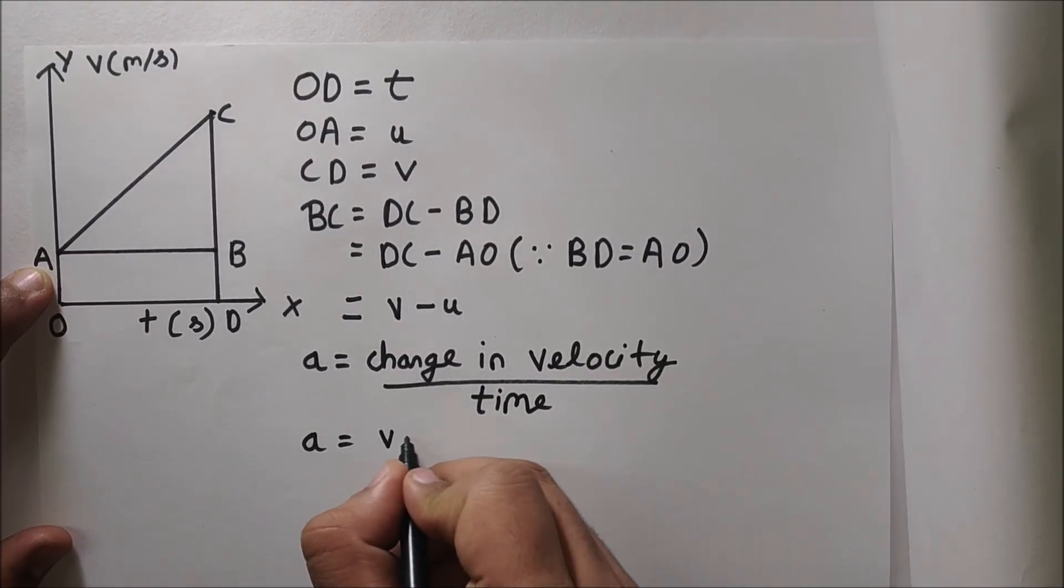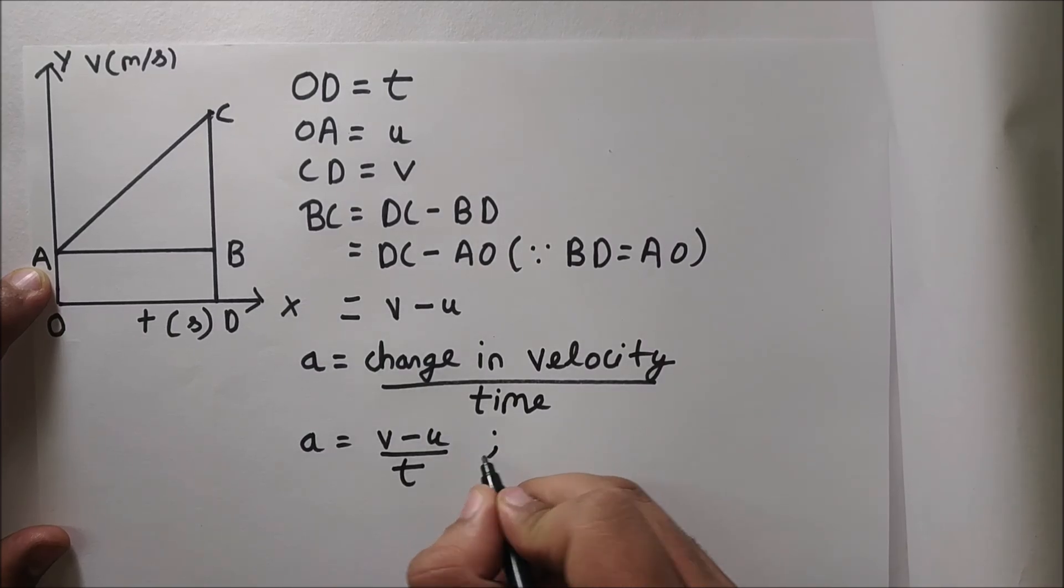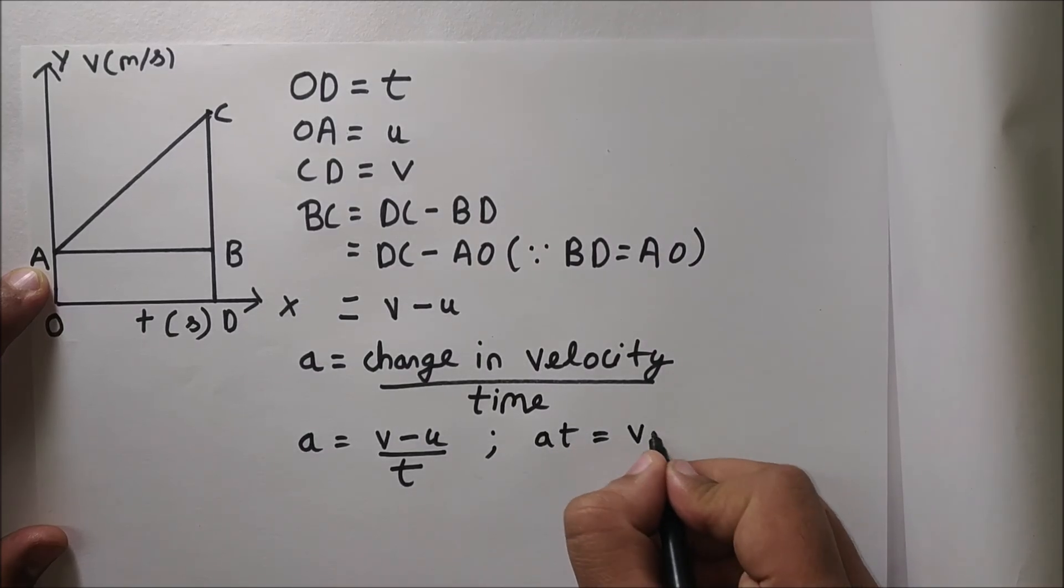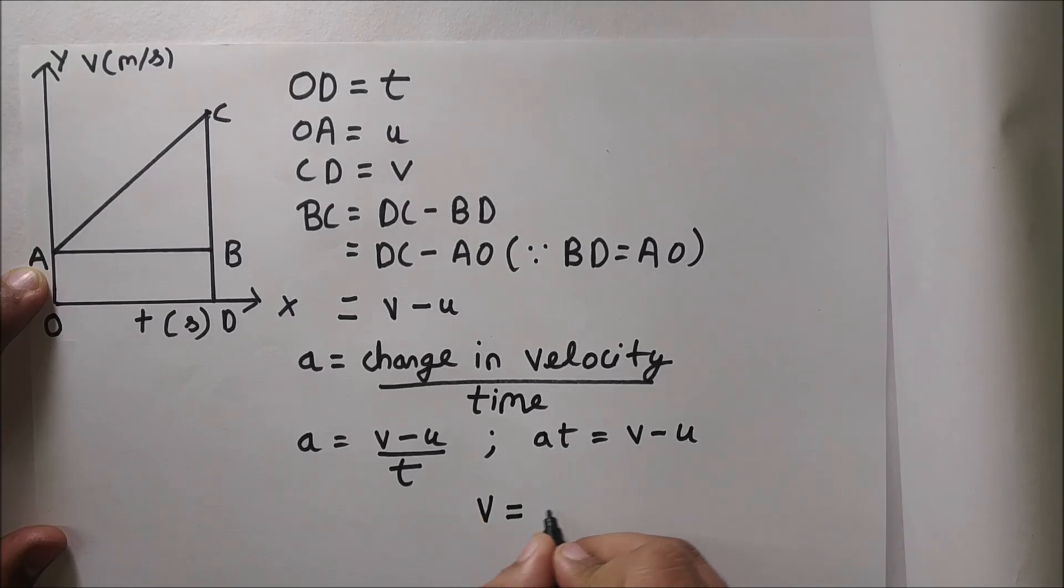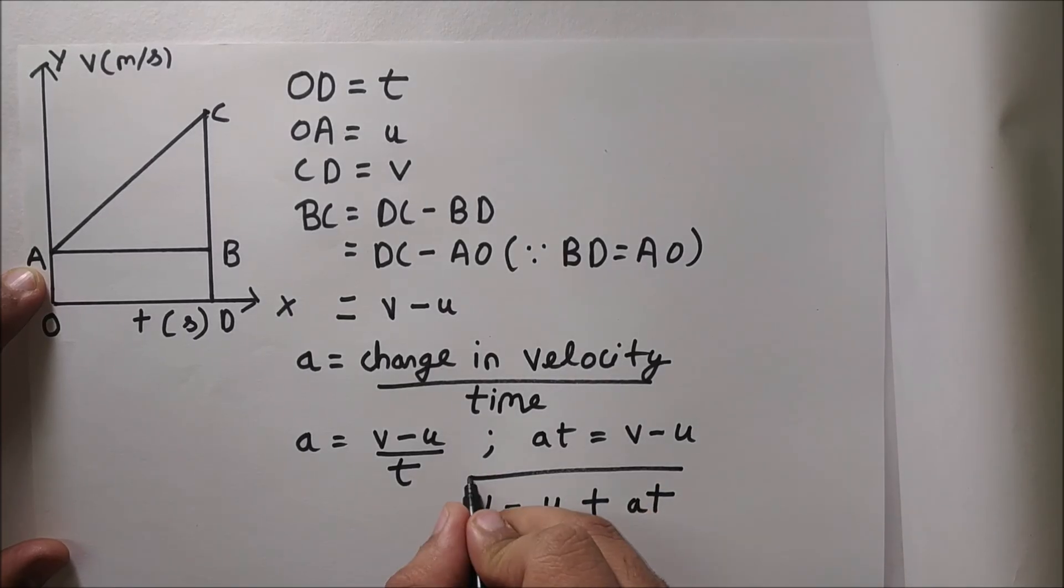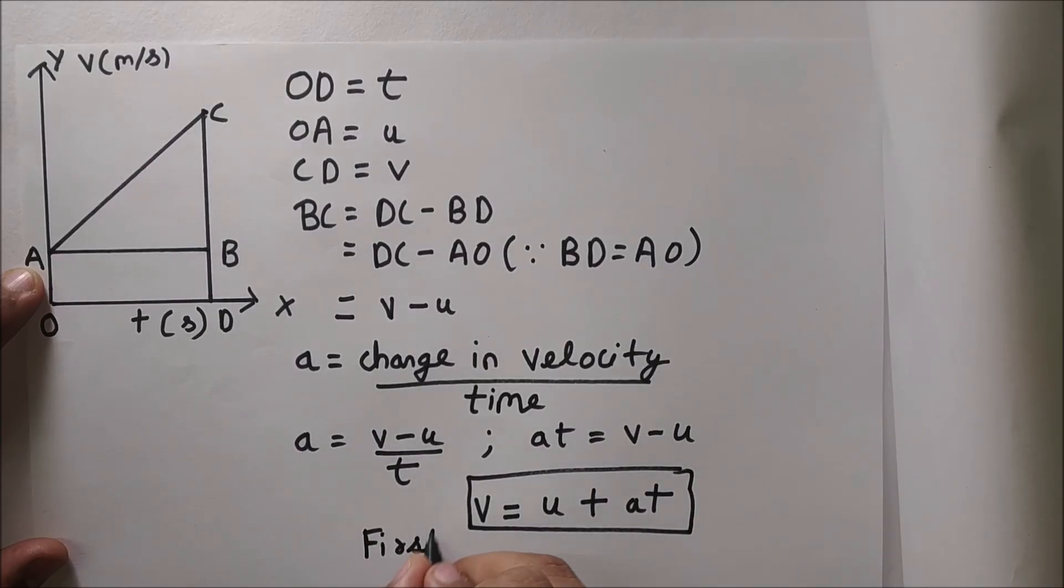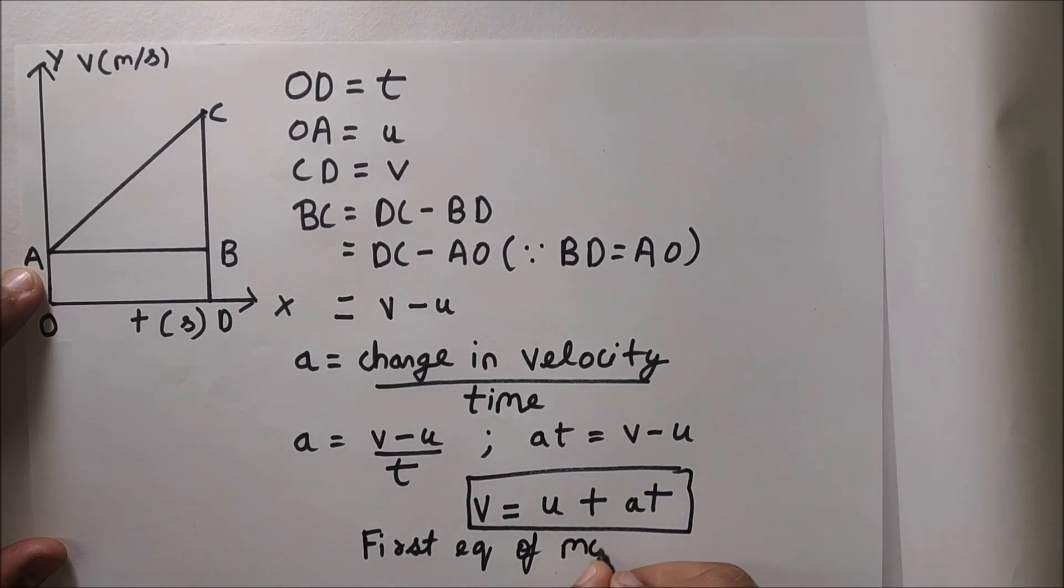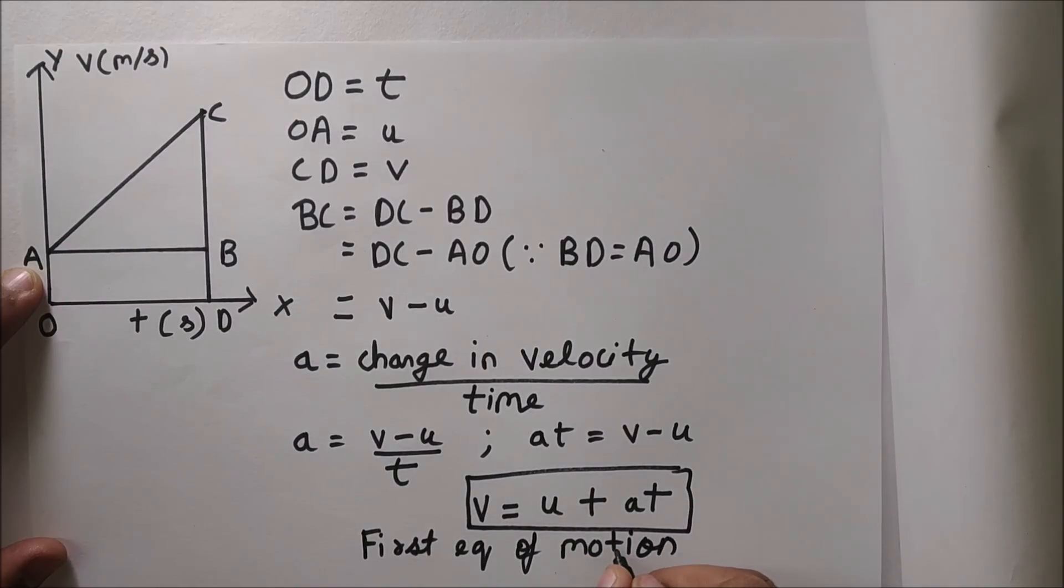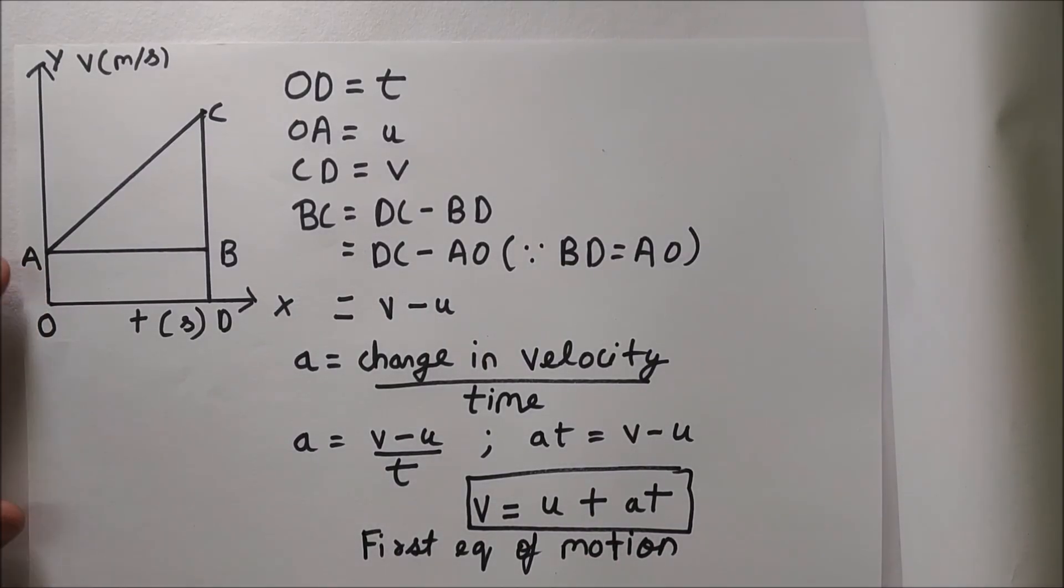Now we can take the t to the LHS and at is equal to v minus u. And here we can take that minus u onto the LHS and we can write it as v equals to u plus at. And hence we have derived the first equation of motion.